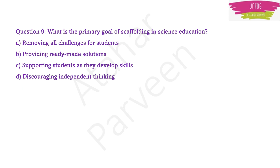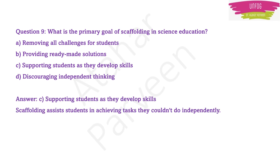Next question: what is the primary goal of scaffolding in science education? Options are removing all challenges for students, providing ready-made solutions, supporting students as they develop skills, and discouraging independent thinking. The correct answer is option C — supporting students as they develop skills — because scaffolding assists students in achieving tasks which they cannot do independently. The primary goal of scaffolding is to support students as they need time to develop skills.